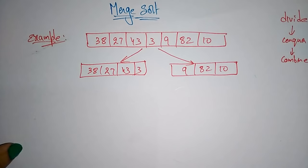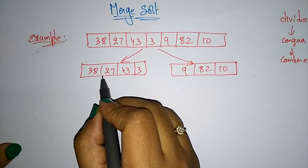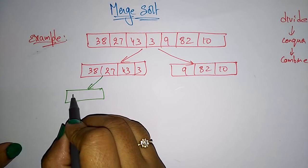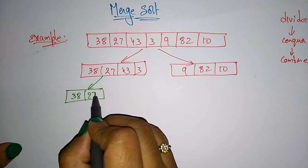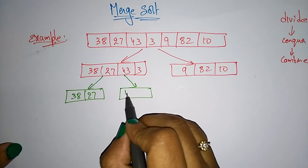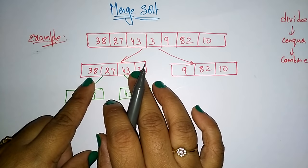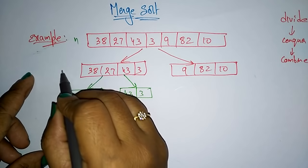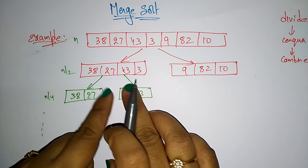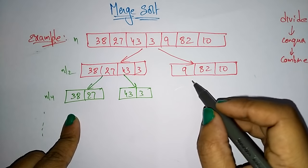Again, I am dividing recursively. Now dividing this array into two halves: 38, 27 and then 43, 3. So this array of size n/2 is now divided into n/4. I divided this array again into two halves, and in the same way here also.